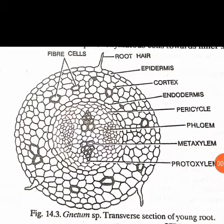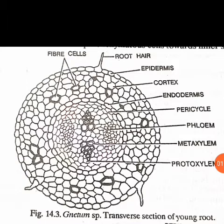In other roots, as when we studied Pinus and Cycas, the cork cambium originates in the epiblema. It cuts multi-layered cork cells towards the outer side and parenchymatous cells towards the inner side. This also happens in Gnetum, unlike angiosperms, where the cork cambium does not divide into outer cork cells and inner parenchymatous cells.